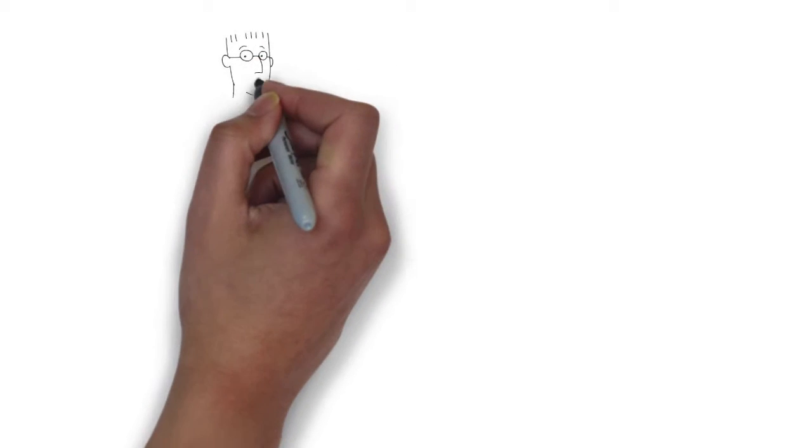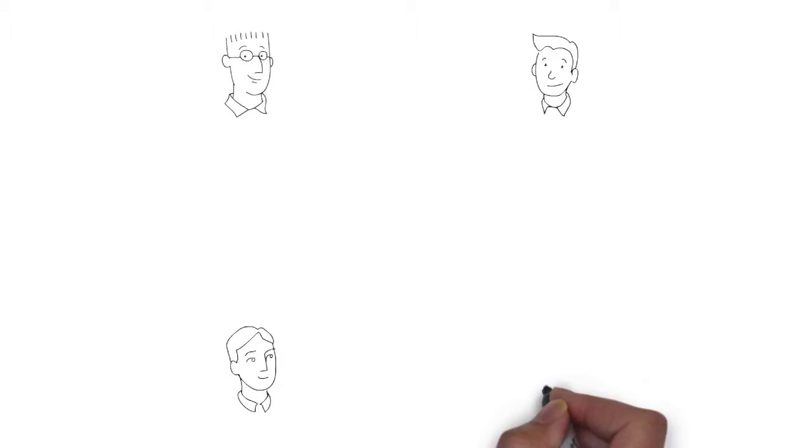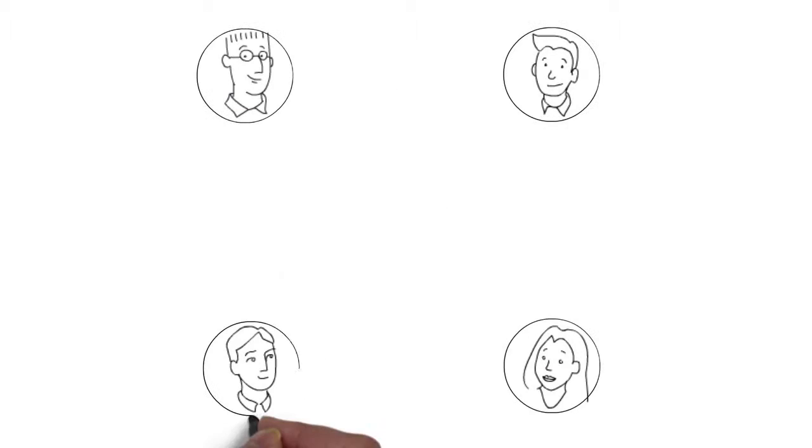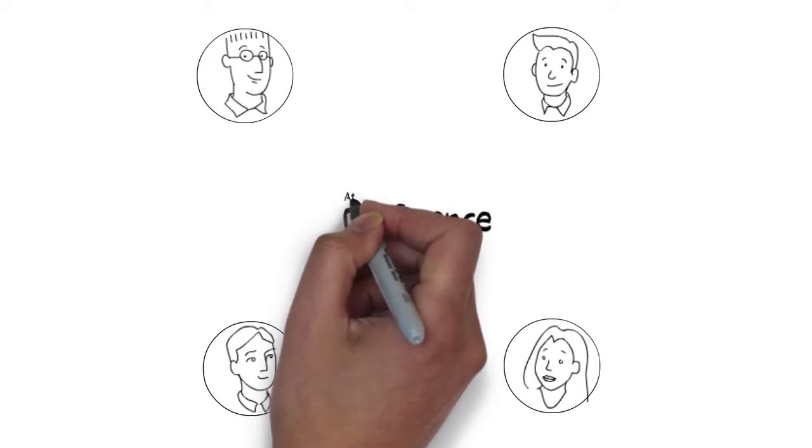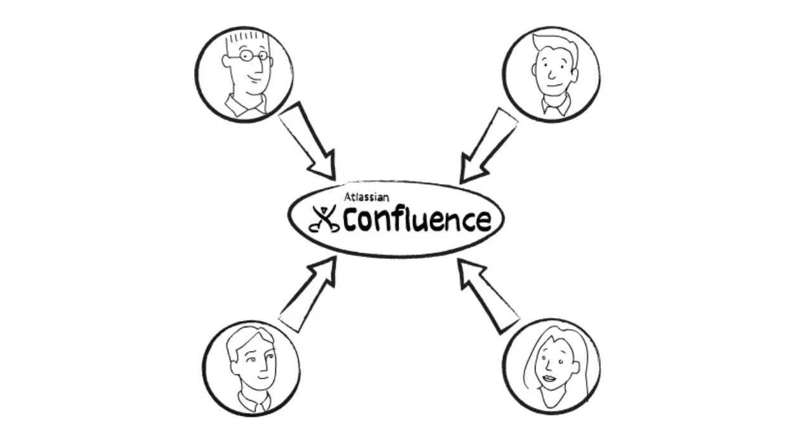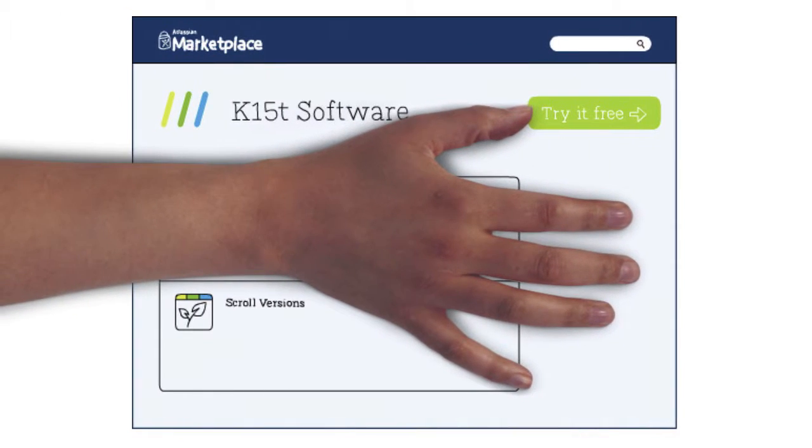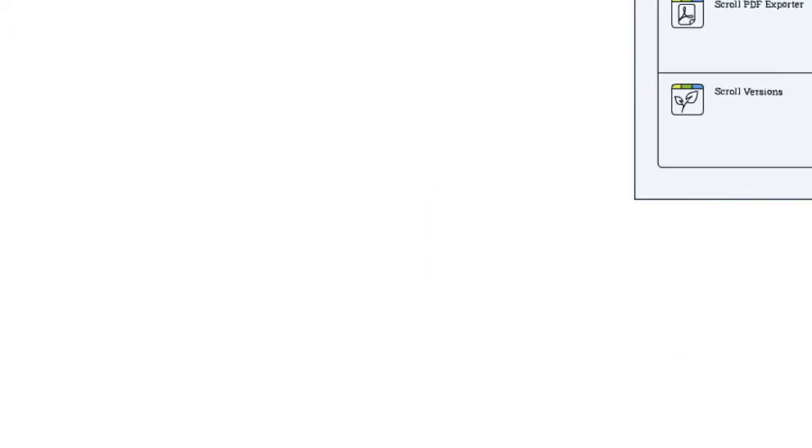Yeah, I've been working on it in Confluence. I made a version of your requirements on the wiki, and I've been rewriting the documentation for the client all along. You have? I said. How'd you do that? He says, Well, with Scroll Versions. It's those add-ons for Confluence I told you about, remember?